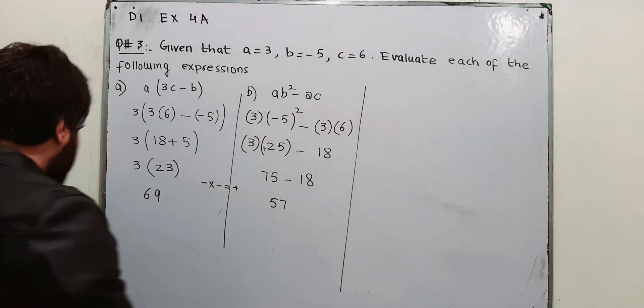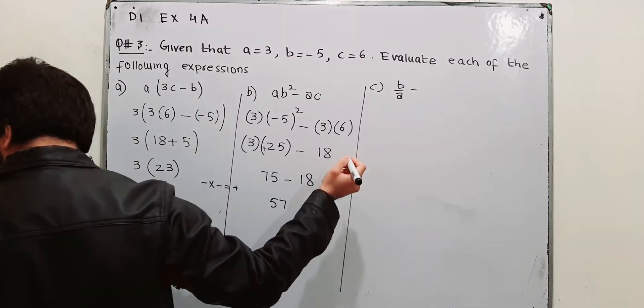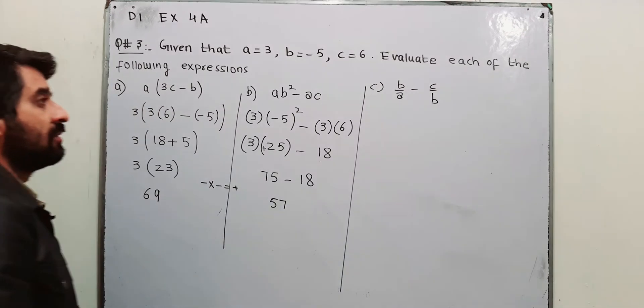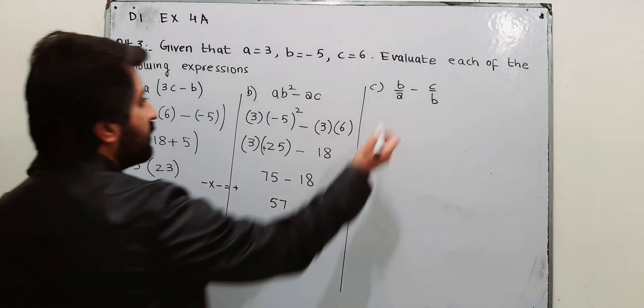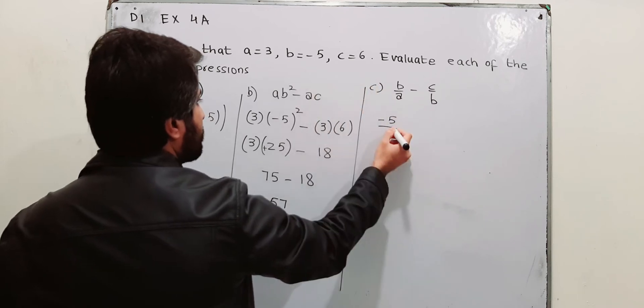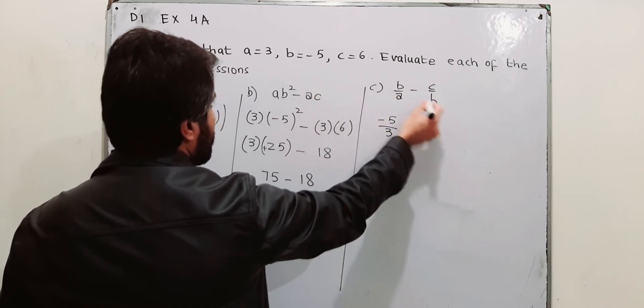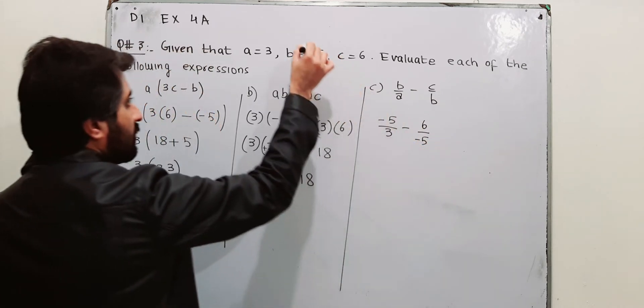Part number C says B over A minus C over B. You have to evaluate this expression. The value of B is minus 5 and A is 3. C is 6, B is minus 5.